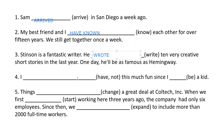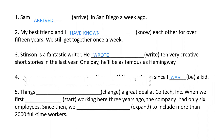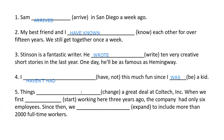Sentence four: 'I haven't had this much fun since I was a kid.' The word 'since' signals the present perfect in the main clause: 'I haven't had.' The verb after 'since' must be in the simple past: 'since I was a kid.' So the full sentence is: 'I haven't had this much fun since I was a kid.'